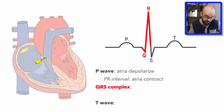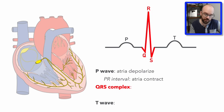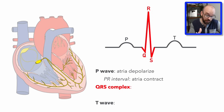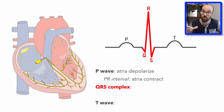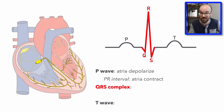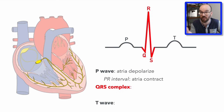In the QRS complex there's a huge R spike, caused by the signal passing through the bundle of His, the bundle branches, and the Purkinje fibers, stimulating all that cardiac muscle. The electrical activity is much greater in the ventricles because they have more cardiac tissue and must pump blood much farther — the atria only pushed blood from one chamber to another, but the ventricles pump to the lungs and throughout the entire body, requiring a very strong contraction.